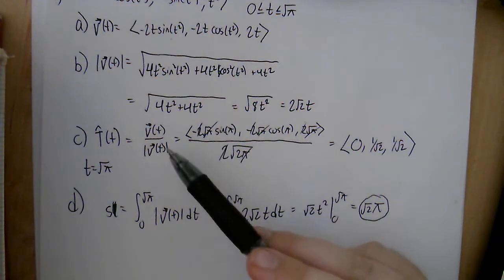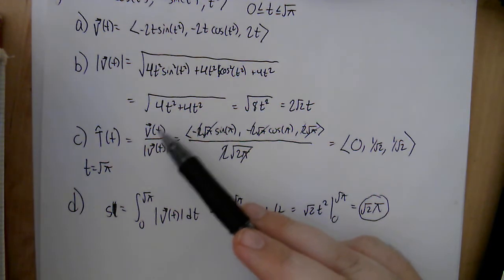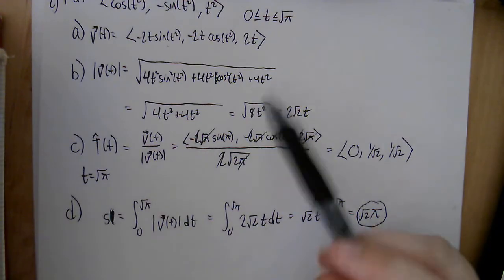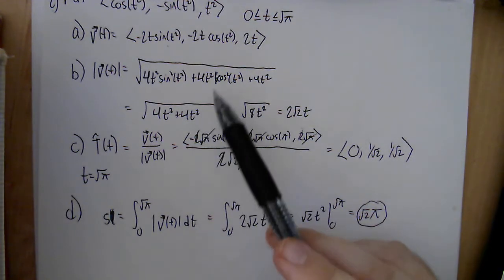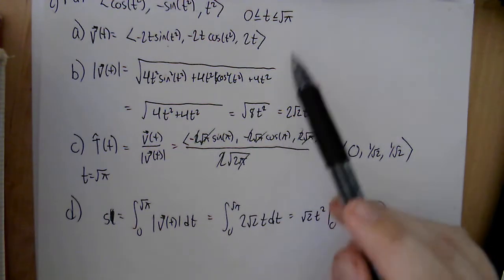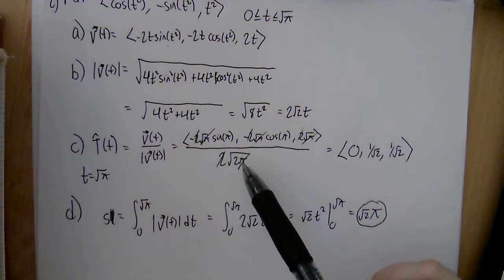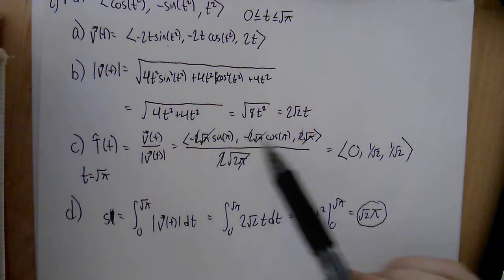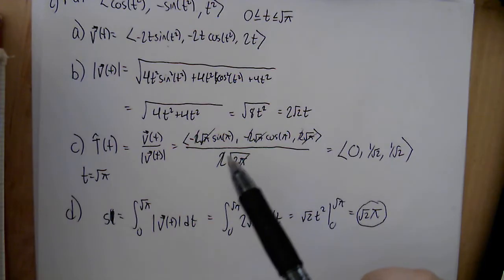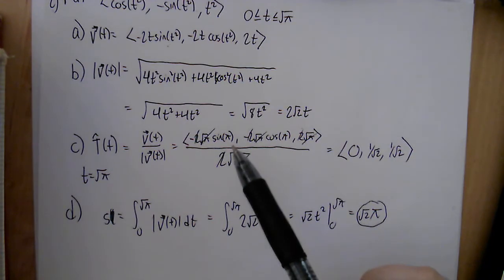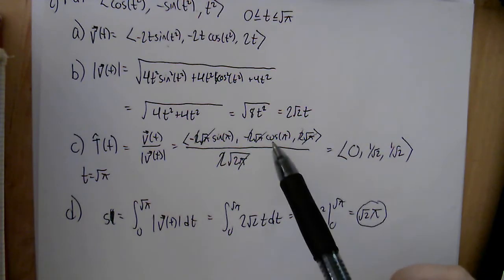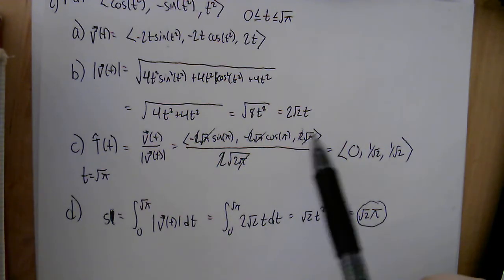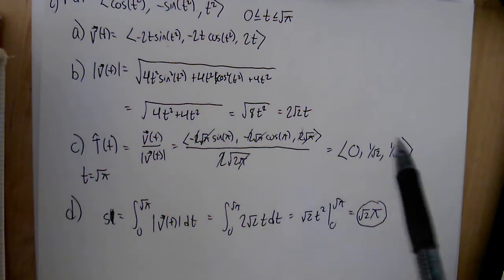The unit tangent vector T-hat is the velocity divided by the speed, evaluated at t equals root pi. Plugging root pi into the velocity and the speed 2 root 2 t, the 2s cancel and the root pi terms cancel, leaving root 2 in the denominator. In the numerator: sine of pi is 0, cosine of pi is negative 1 giving positive 1 over root 2, and the last component is 1 over root 2. So the unit tangent vector at root pi is (0, 1 over root 2, 1 over root 2).